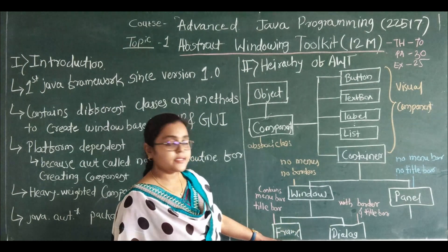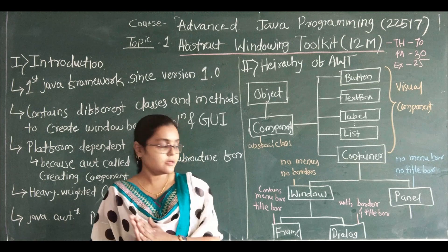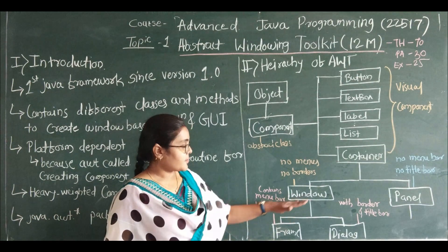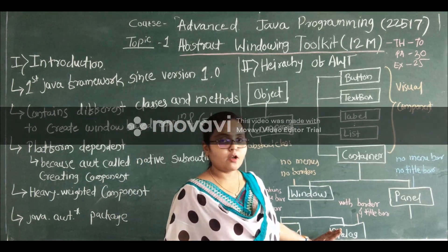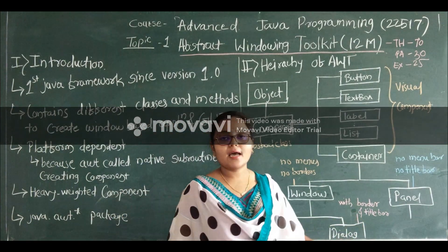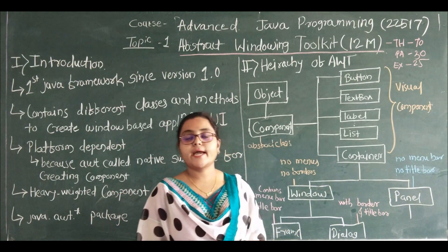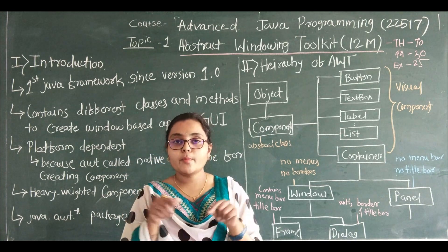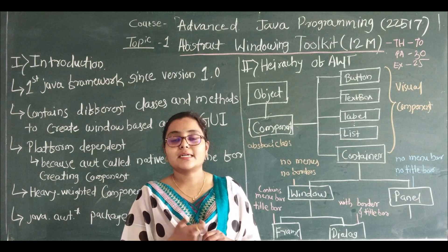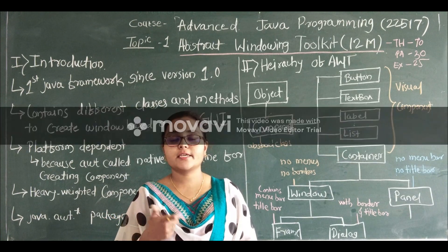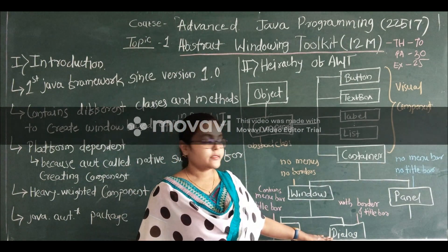The subclass of Window is Frame. The Frame contains a title bar and menu bar, and it acts as one type of window. Again, Dialog — the Dialog comes with a border and title bar. One example of a dialog is a pop-up option that is generated, for example 'login successfully' or 'saved successfully'. That window generated is called a Dialog.